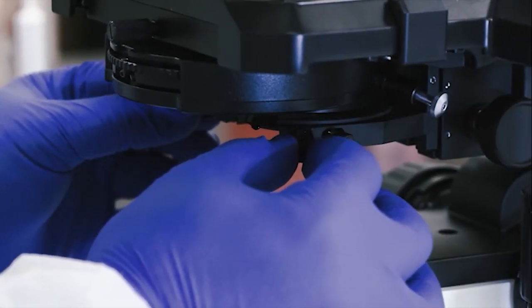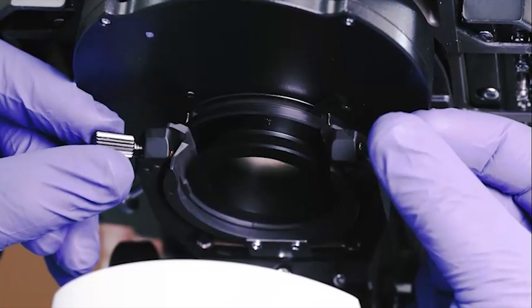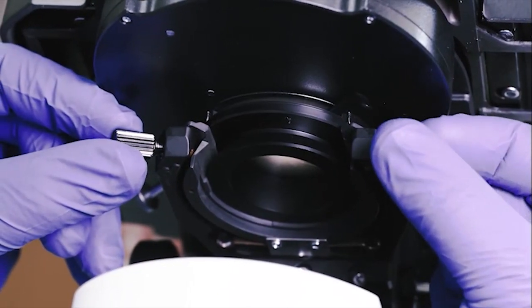Using the centering screws on the side of the condenser, center the edge of the circle of light in the center of the field of view.